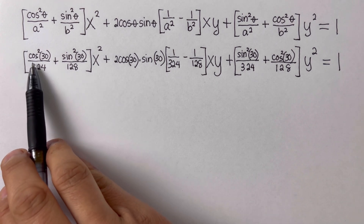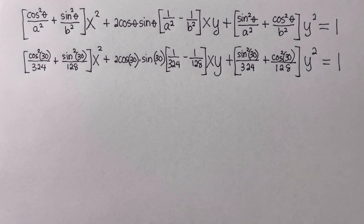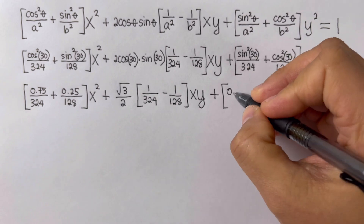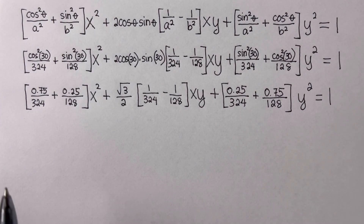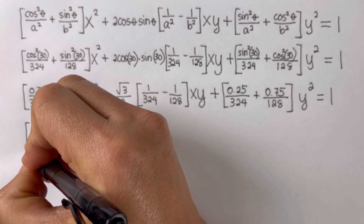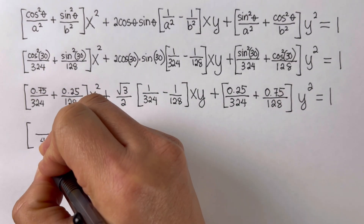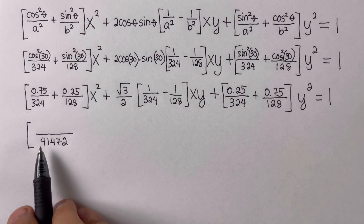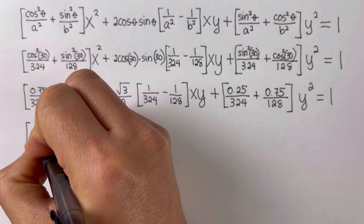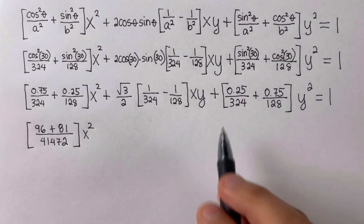Simplifying further: cosine squared 30 is 0.75 and sine squared 30 is 0.25. Substituting these values, we work through the resulting equation. Adding and subtracting the resulting fractions, we multiply 324 times 128 to get 41,472 as the common denominator. This allows us to combine terms, yielding expressions such as 96 plus 81 for the x squared coefficient.